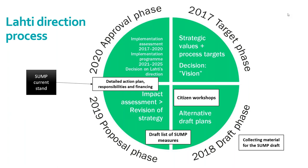Between 2018 and 2019 we were able to draft the list of SUMP measures. In spring 2019, we brought it to the board and gave it to public consultation — the same as the master plan draft. We gathered feedback from citizens and different organizations. Since then we've been going through the feedback and conducted impact assessments for mobility, ecosystem services, and wellbeing in the city.